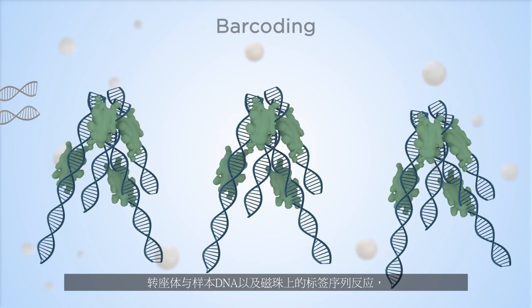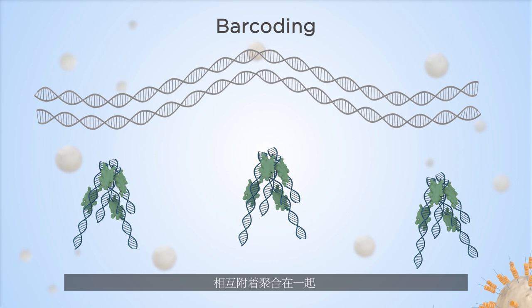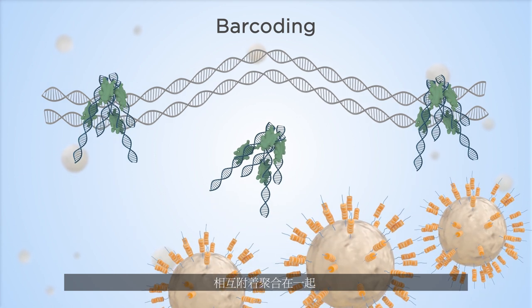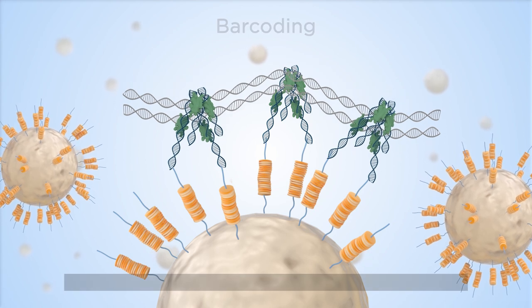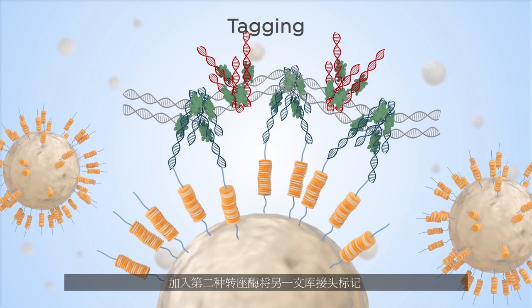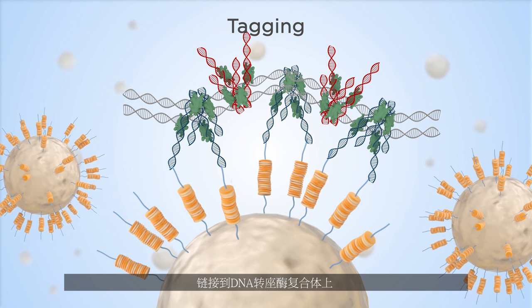The transpososomes react with the DNA and the barcode, drawing them together until they're attached. A tag is then inserted on the DNA fragment complex by a second transposase.